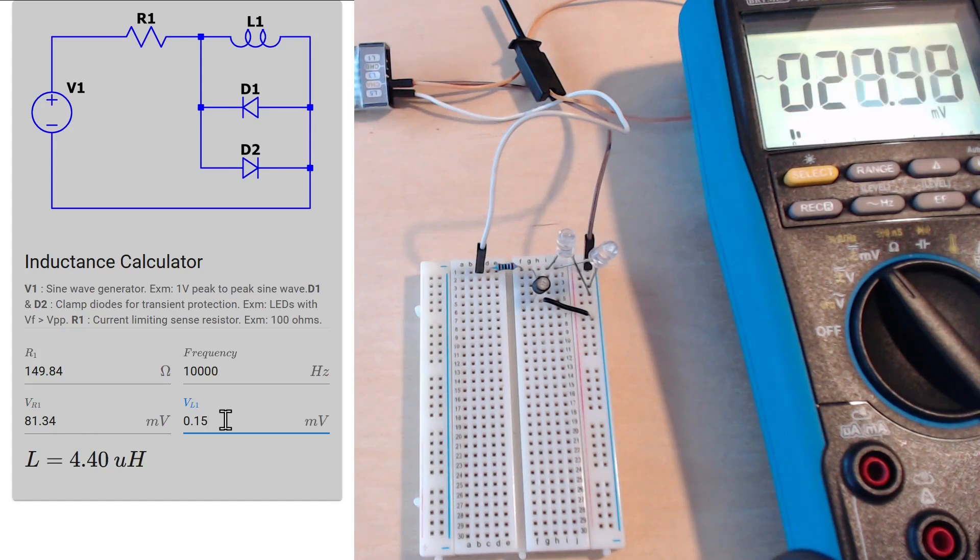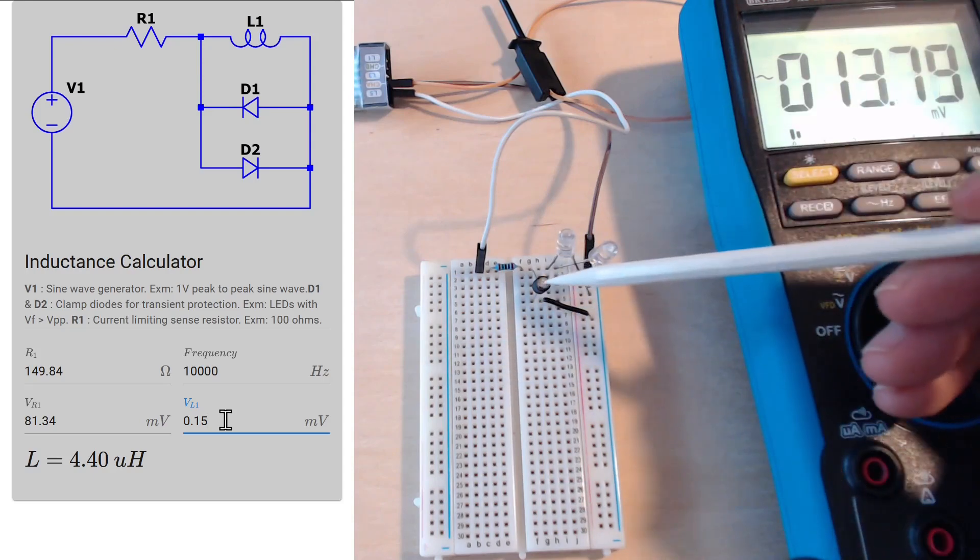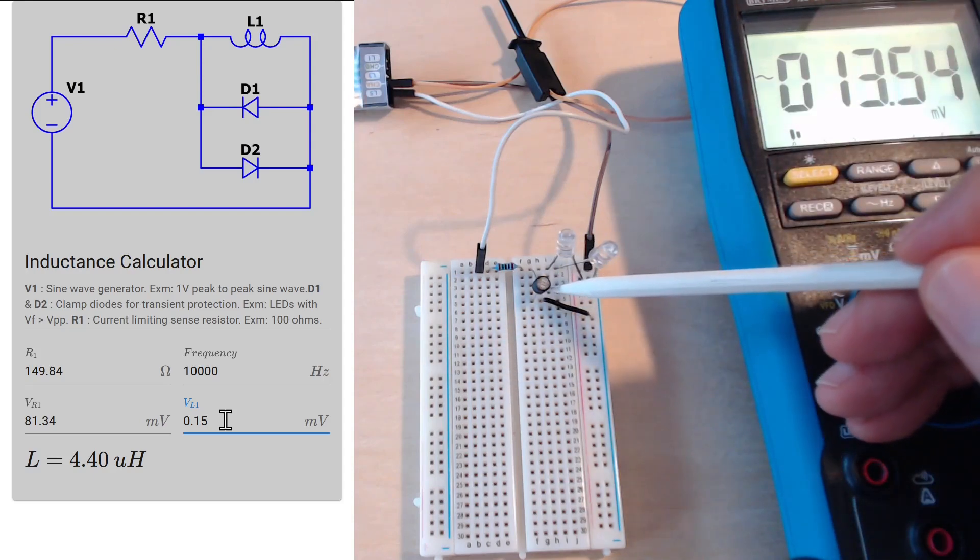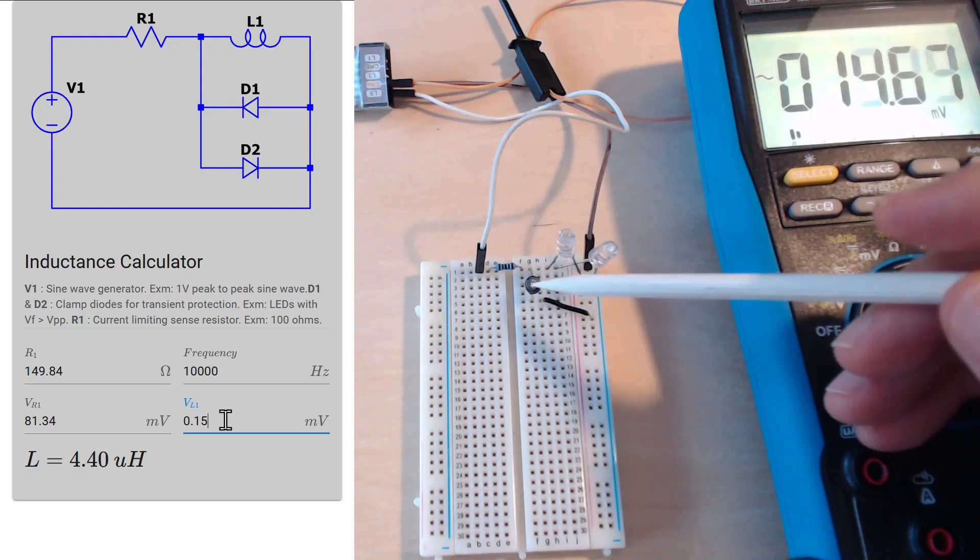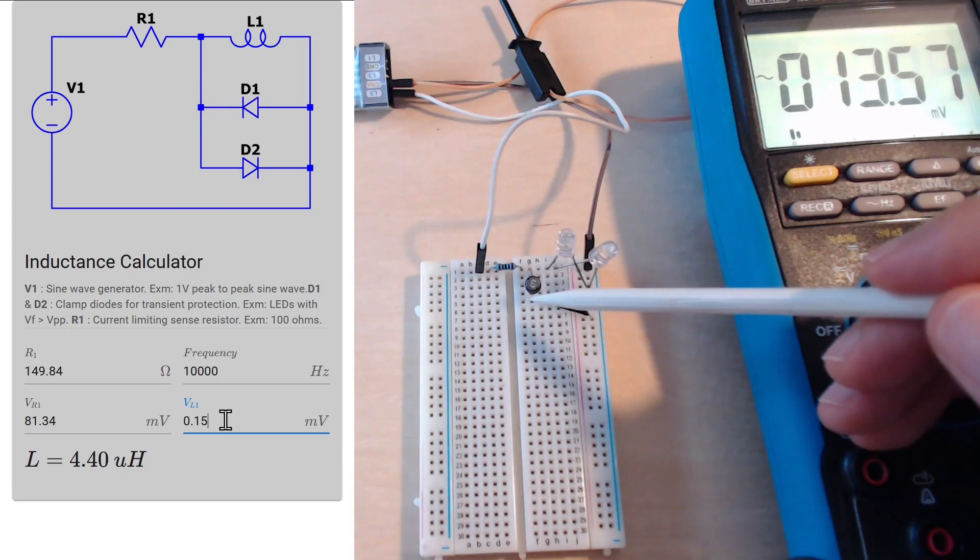And now let's measure the voltage across our inductor, which is 0.15 millivolts. And yeah, that gives us exactly 4.4 microhenry inductance in this inductor. It's 4.7 but this has 20 percent tolerance, so it's well within the tolerances of the component.